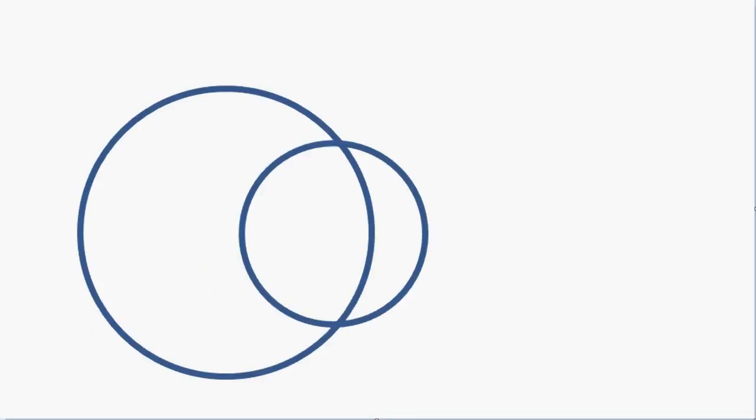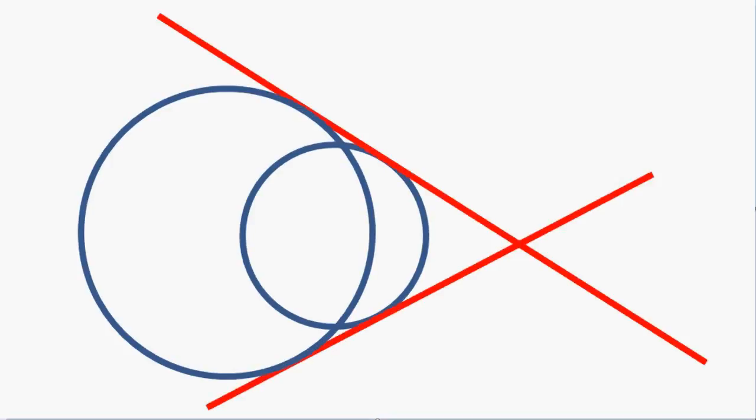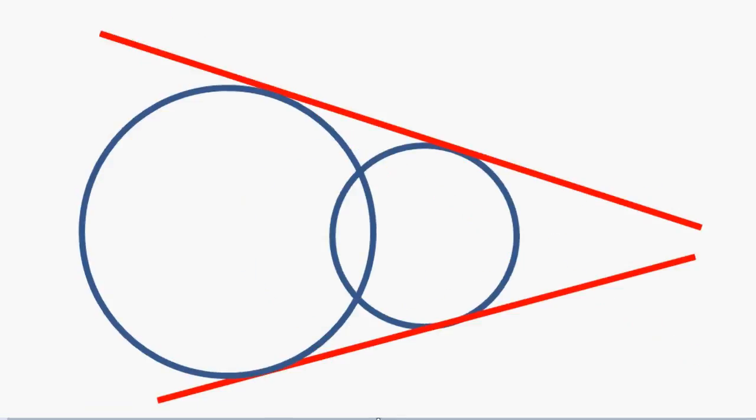Next, let us look at this situation, where the two circles intersect each other. Now, we can draw two tangents with a tangent to both the circles, as shown in this figure, and in this figure also.